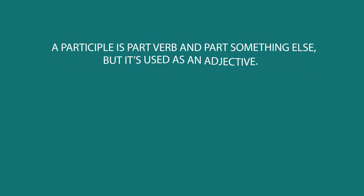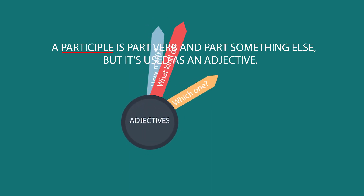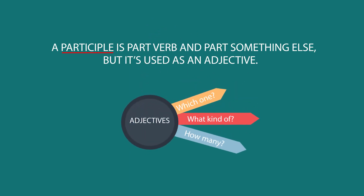A participle is part verb and part something else, but it's used as an adjective. Remember that adjectives answer one of these questions: which one, what kind of, or how many.